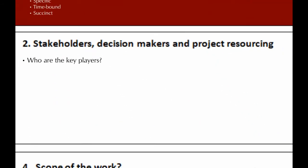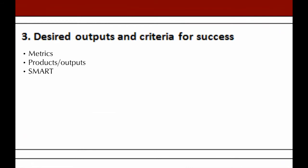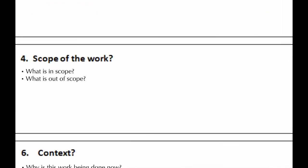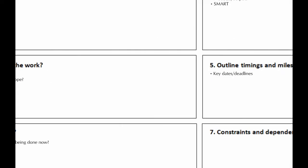It then asks who are the key players, the stakeholders, decision makers in your project, and who's going to be resourced on it. It'll also ask what your desired outputs and criteria for success are, such as metrics and products. The fourth part is the scope of the work, detailing what's in scope and what's out of scope.